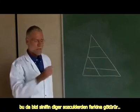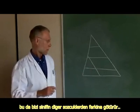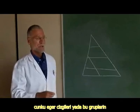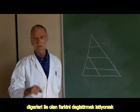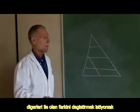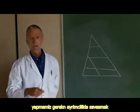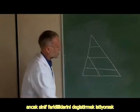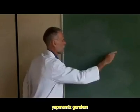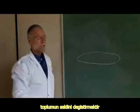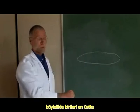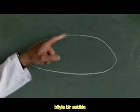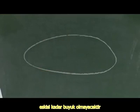That leads us to the other difference between class and those other words. If we want to change the differences between people in terms of race, disability, or sexual orientation — the way they're treated — then what we have to do is fight discrimination. But if we want to change class differences, then we have to change the shape of society so that some people are not a lot wealthier than others. With a shape like this, the differences between the top and the bottom are not nearly so great.